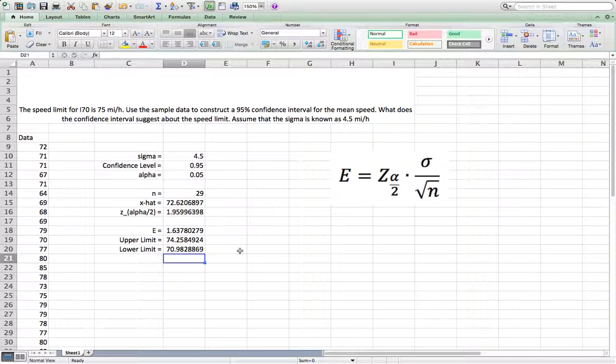So basically we can say the population mean speed is not on average over the limit. The people did not drive over the speed limit because since the speed limit is 75 miles per hour, your whole confidence interval is below 75 miles per hour.